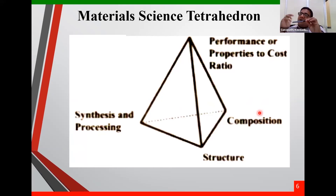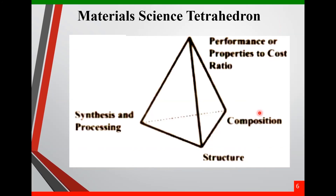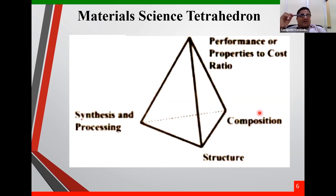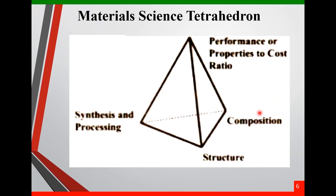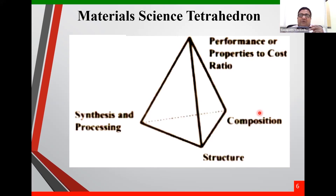Is composition sufficient, or is anything else required? We also need structure — layers of structures. Is the property coming only from composition or anything else? The treatment it goes through matters too. What treatment? Cold drawing the material, or heat treatment, or other treatments — what do those do? Those treatments alter the microstructure of the material.